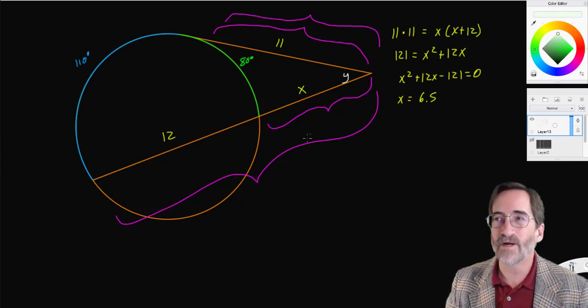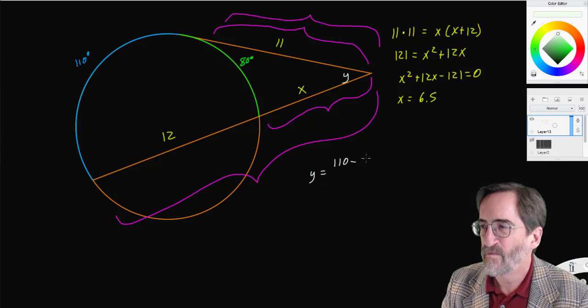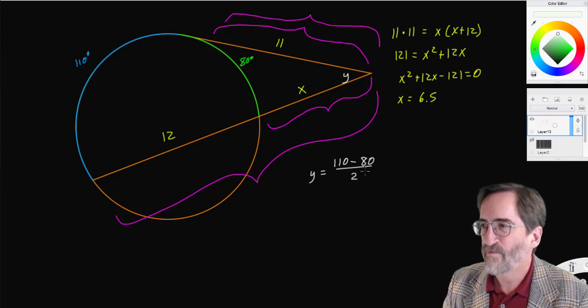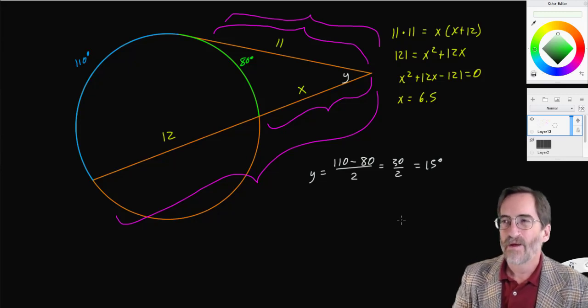Well, the same rule applies that applied before. So if I want to find Y, I subtract the intercepted arcs: 110 minus 80, and divide by 2. 110 minus 80 is 30. Divided by 2 is 15 degrees. So that's really it.